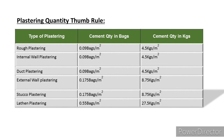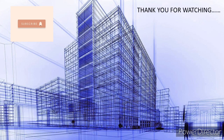Continued plastering data: required cement quantity is approximately 27.45 kg per m². Another plastering type requires cement quantity of 0.188 bags per m², equal to 27.5 kg per m².